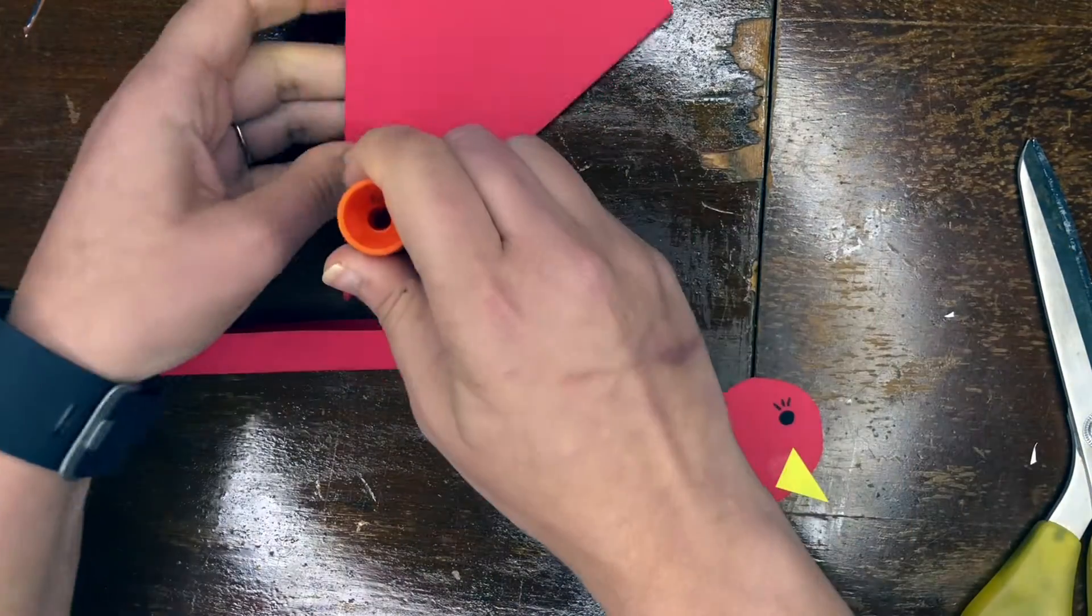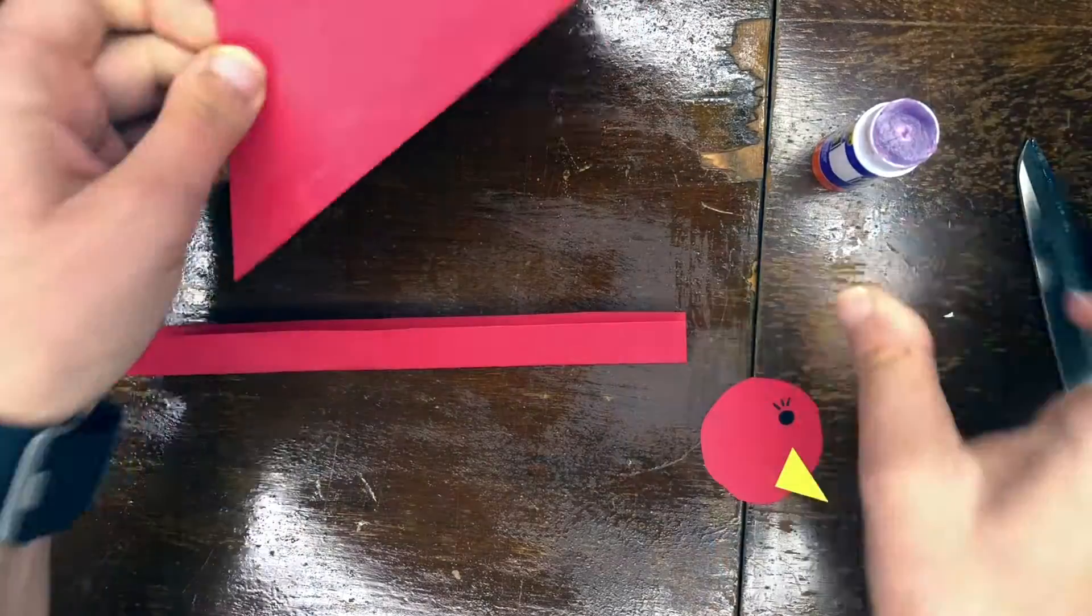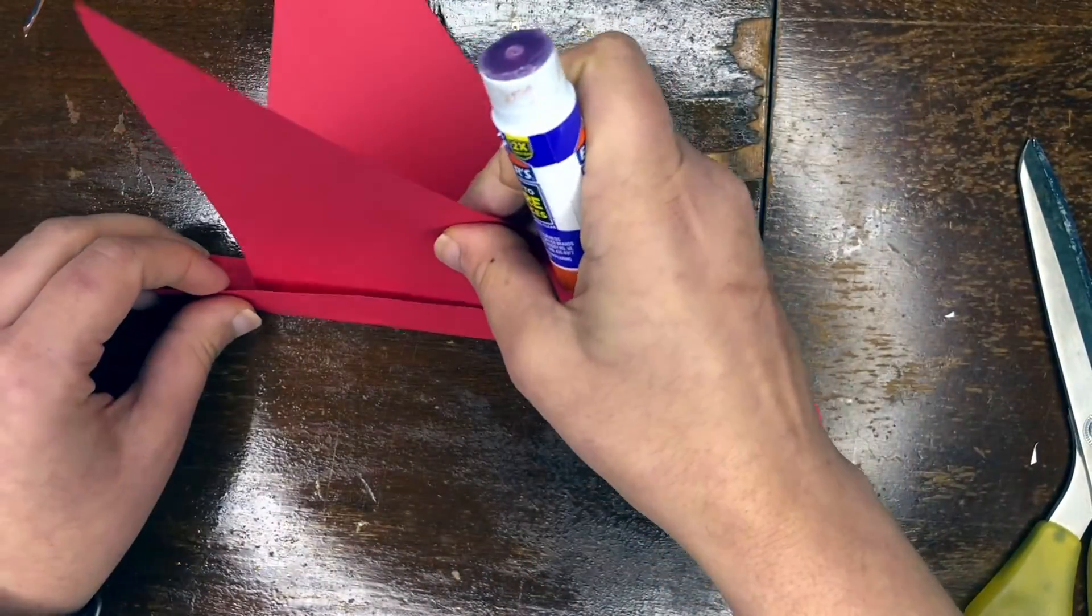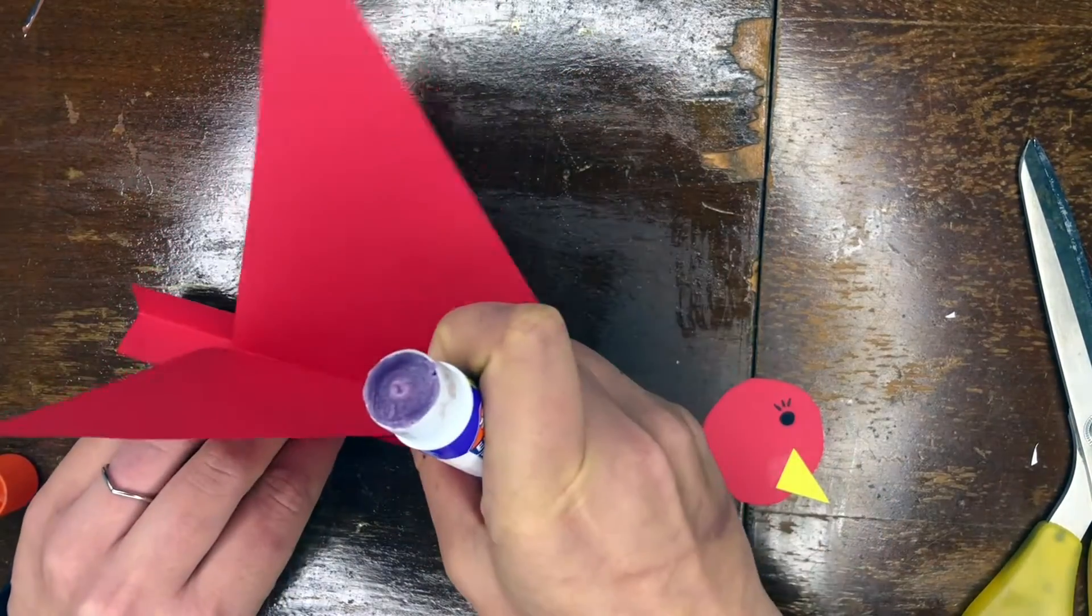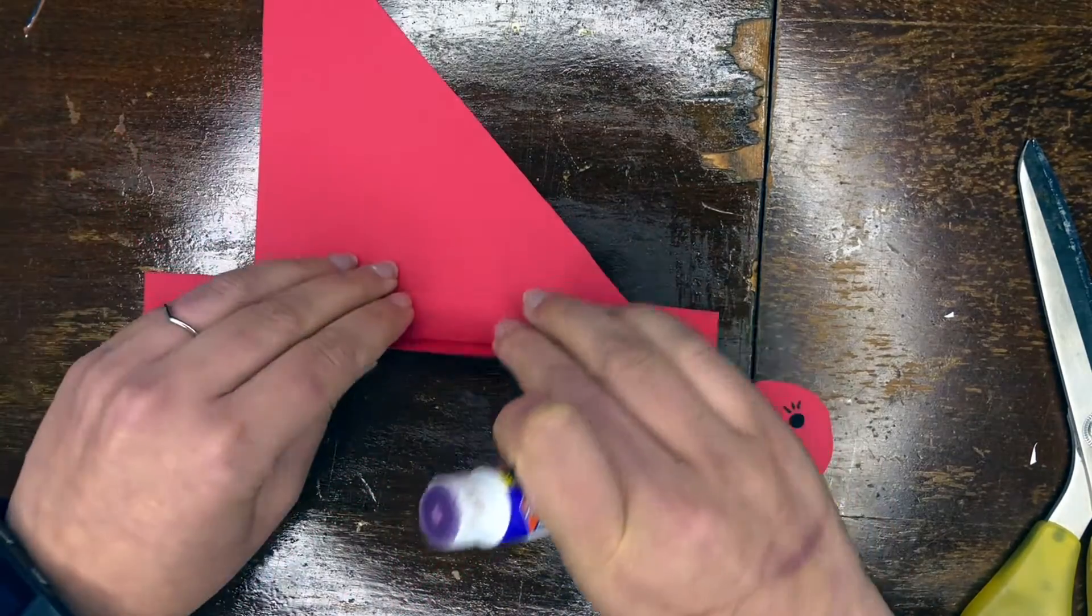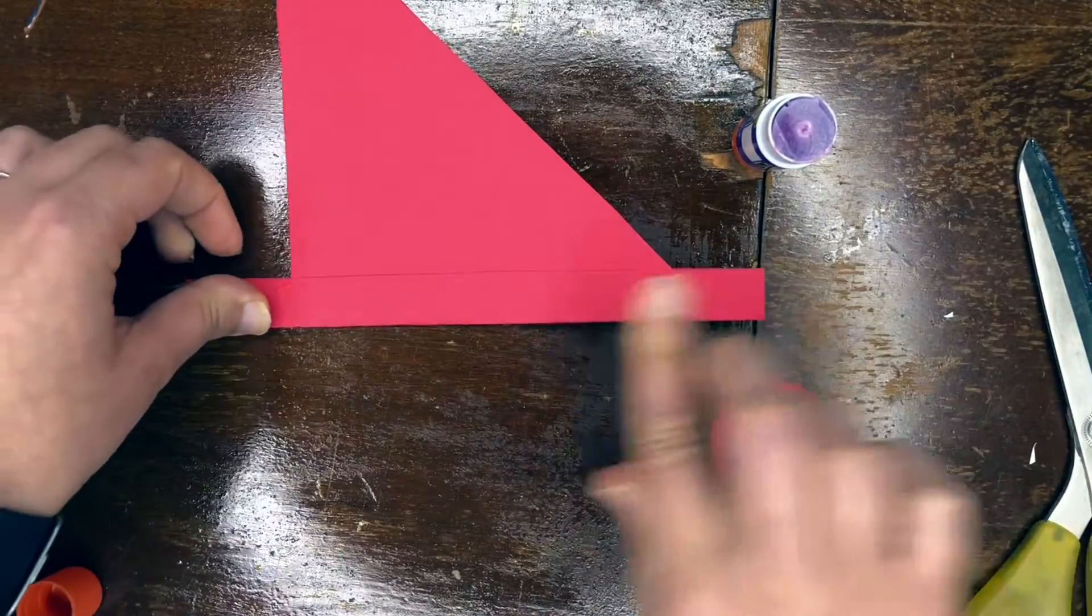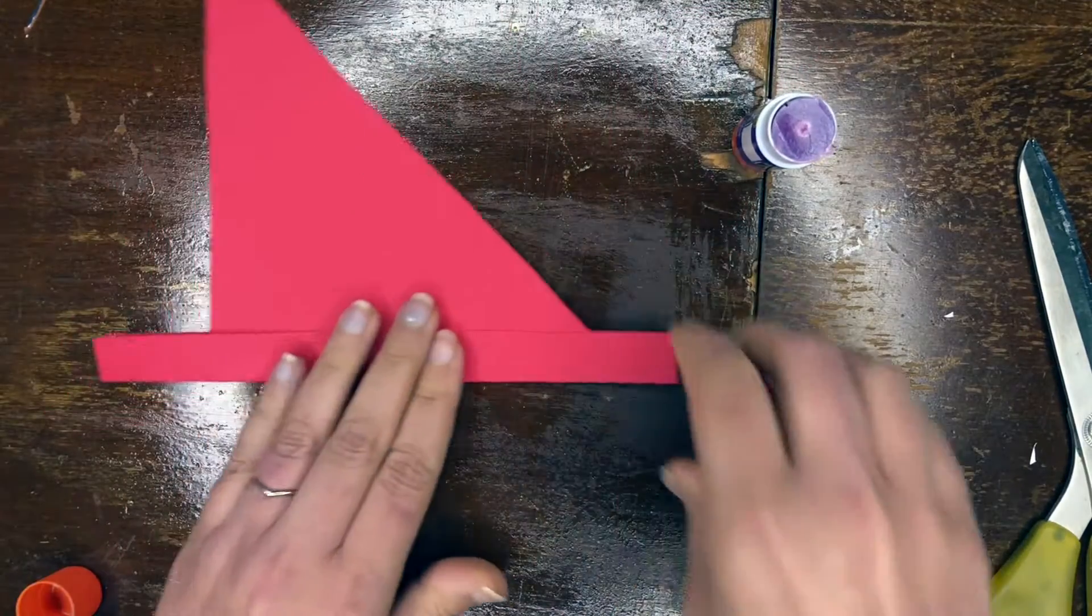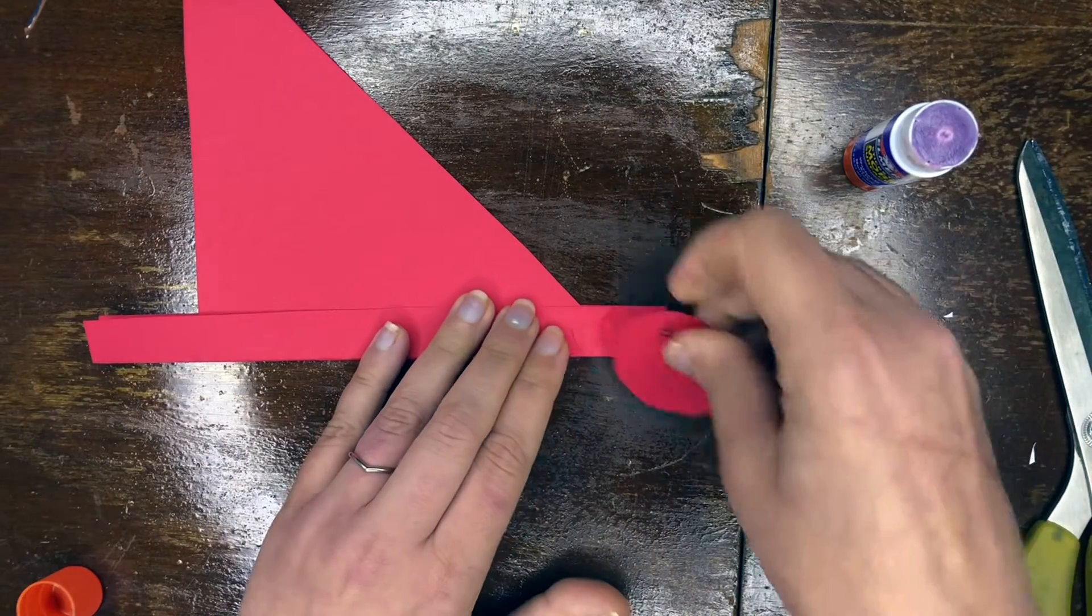I'm going to glue my wings. So I'm going to put a line there. Put it inside your fold. I'm also going to open up my fold, put a line right there as well. Now I can put glue right there. Put my head on.